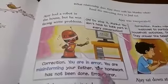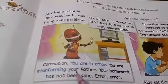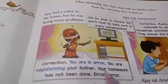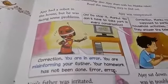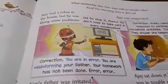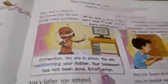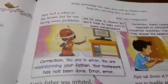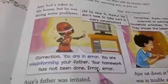He said he did not do it — 'I did not do it.' Error. Error means mistake. The robot said: 'You are misinforming your father. Your homework has not been done.' Error. Now you know, the word 'error' — you have seen it many times on your mobile phones and computers. Error means mistake.